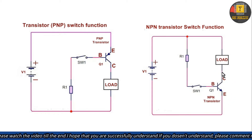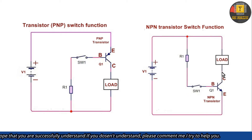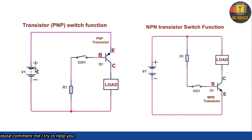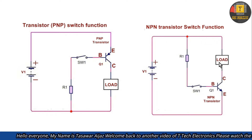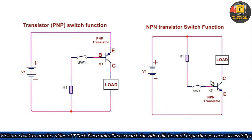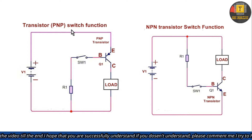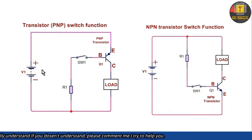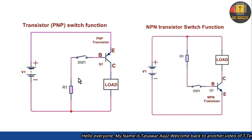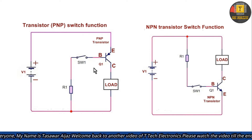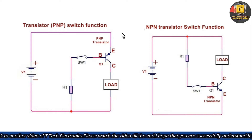I used the 2SC5200 transistor. If you haven't watched my last video, the link is in the description. The main difference in PNP transistor is: we flow current through the transistor from positive, and connect negative directly to the load. In NPN, positive flows through the transistor; in PNP, we apply positive current through here.